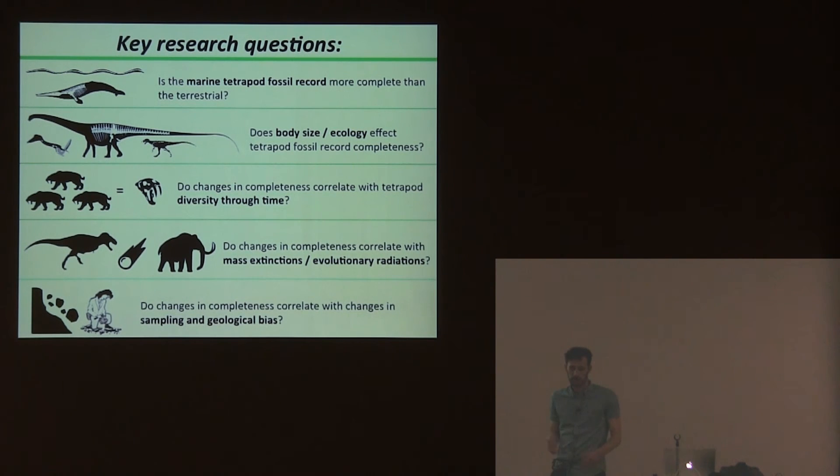Are there particularly high completeness scores for certain groups because we're more interested in them and have collected more data? Or are there particular characters that are more easily diagnosable in the fossil record, making them less dependent on high-quality preservation?